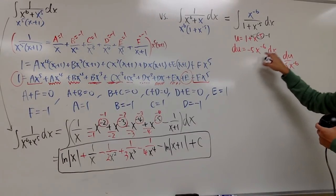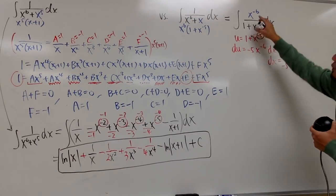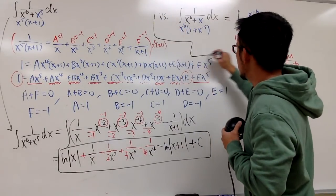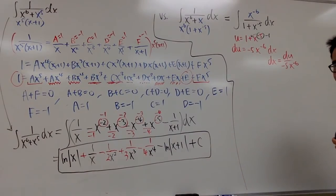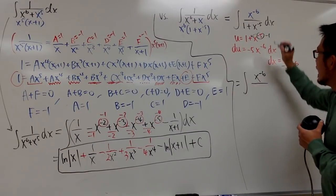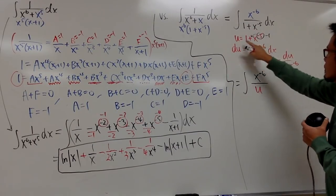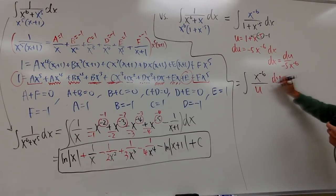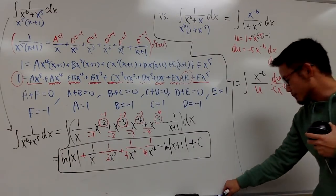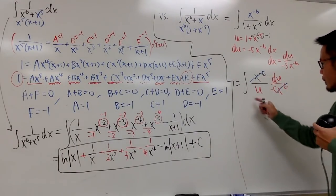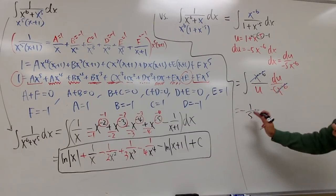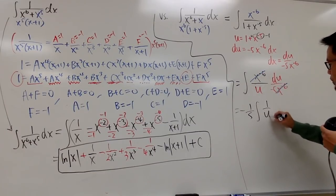Differentiating: du equals negative 5·x to the negative 6 dx. Dividing to isolate dx: dx equals du over (negative 5·x to the negative 6). Now let's take the integral into the u world. On top we still have x to the negative 6; on the bottom it's just u; and dx is du over (negative 5·x to the negative 6). Cancel out the x to the negative 6, and we have negative 1/5 times the integral of 1/u du.